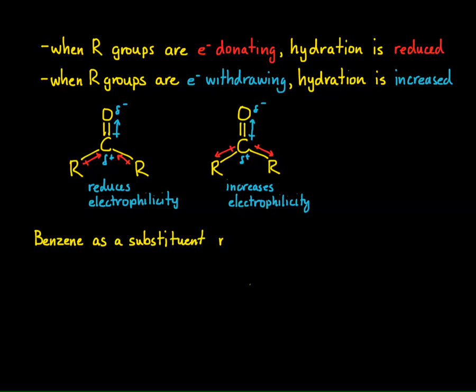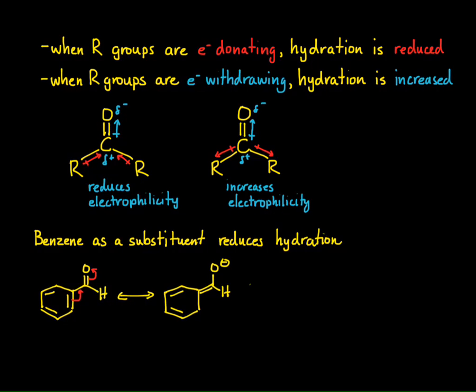Let's take a look at what benzene does. We see that benzene as a substituent of a carbonyl reduces hydration. And why is this? Well, here I have benzaldehyde, and I can draw a resonance structure of benzaldehyde, where I donate a pair of electrons from the ring to that carbonyl, and the carbon-oxygen bond breaks, and the electrons go to the oxygen. The result is this particular resonance structure.